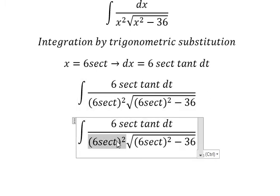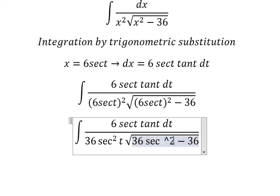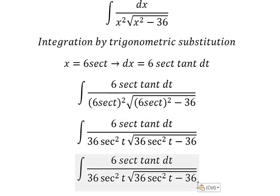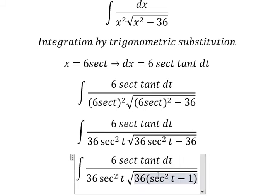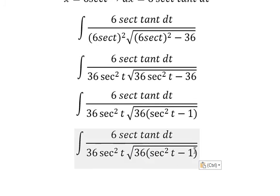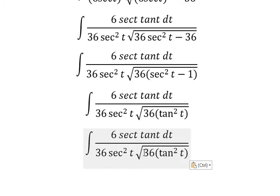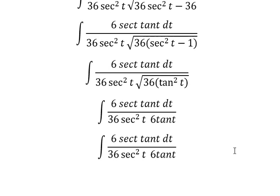So we have 36 secant squared t in the denominator. Later we can do factorization by 36. The square root of 36 tan squared t, we got 6 tan t. And later we simplify 6 secant t tan t on numerator and denominator.